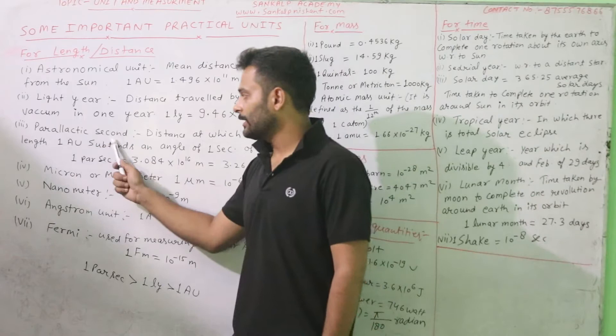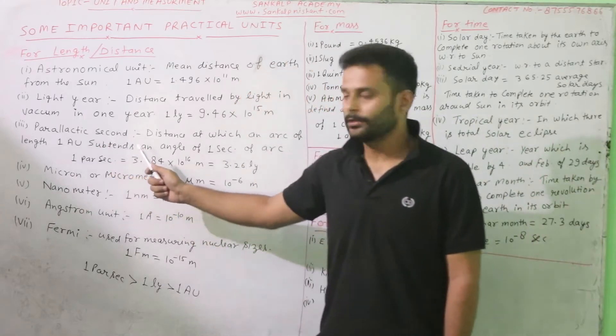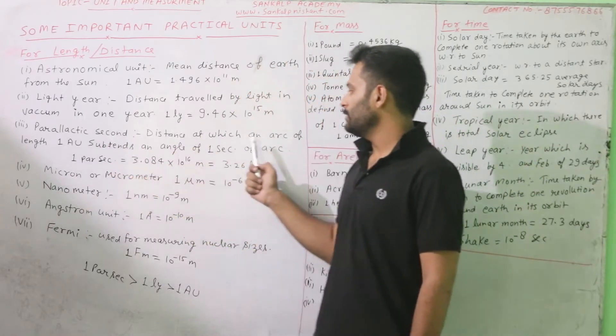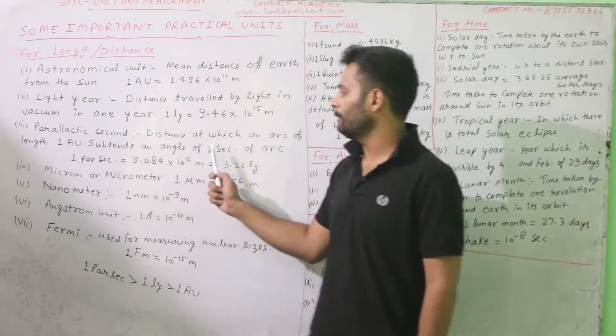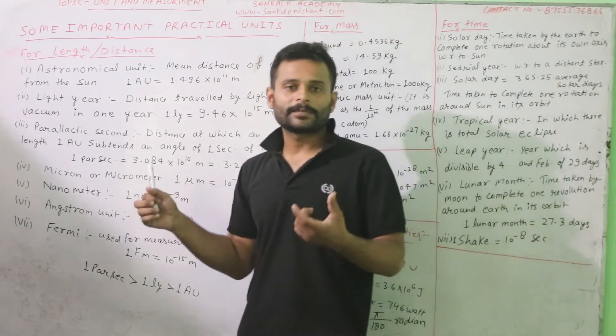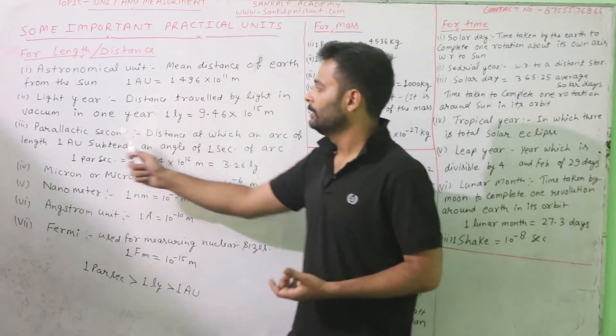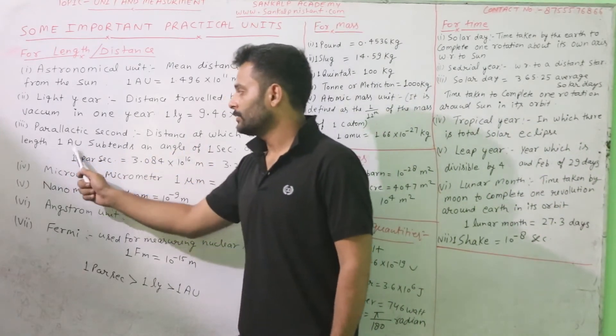Third one is parsec. It is a short term. Distance at which an arc of length 1 astronomical unit subtends an angle of 1 second of arc. 1 second of arc, then the distance. And the arc which is 1 astronomical unit.